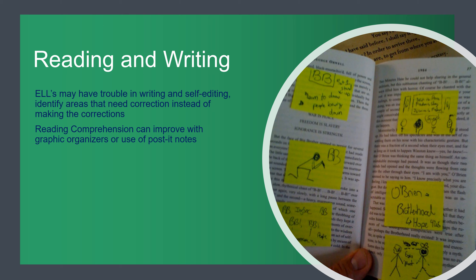Reading comprehension can improve with graphic organizers or the use of post-it notes — keeping up with the story and making little notes within the book can be very helpful. Some programs that can help with reading are Reading A to Z with an ESL program, Starfall which has a great graphic organizer, Snap and Read, and Duolingo.